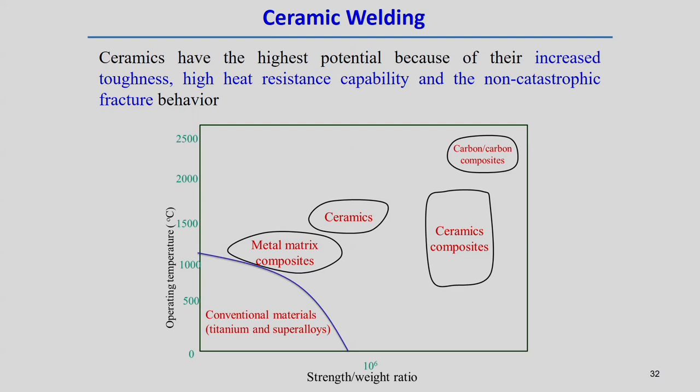Now I will discuss the ceramic welding process. Ceramics are another type of material with huge applications and similar brittle behavior, but they have high potential because of increased toughness, high heat resistance capabilities, and non-catastrophic fracture behavior. These characteristics make the processing of ceramics very difficult. Looking at the operating temperature and strength-to-weight ratio, the operating temperature for welding of ceramics is somewhere in between, with strength-to-weight ratio at a middle position, completely different from carbon composites.